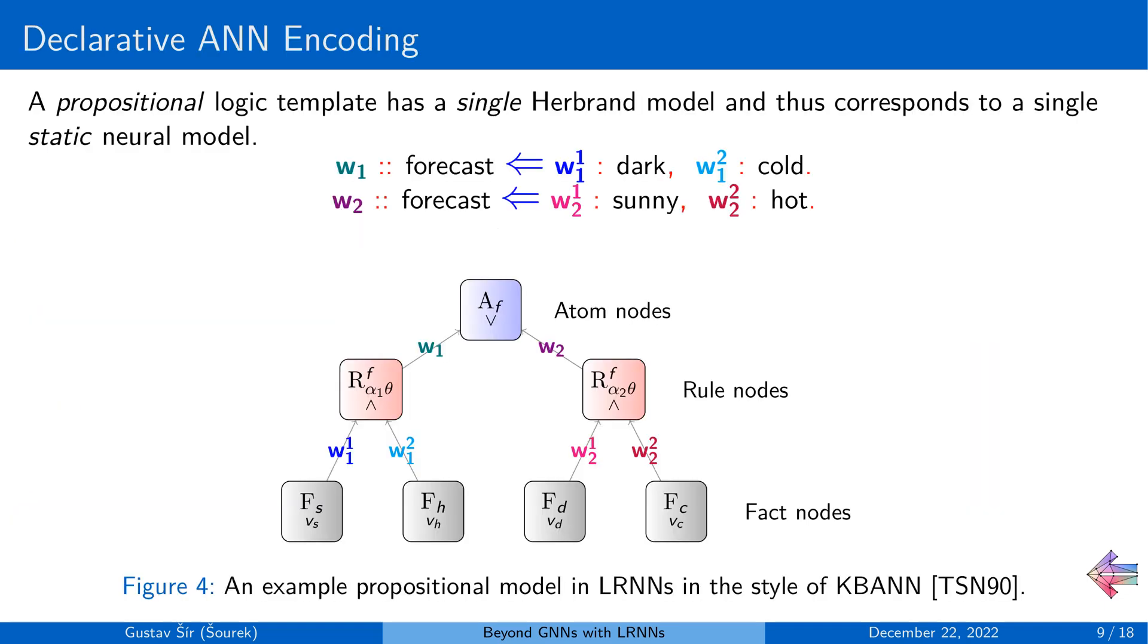So let's start with the simplest concept, which is the standard feed-forward neural nets modeling. Now, exploring correspondences between feed-forward neural propositional logic programs has been done a lot in the 90s already. You might have heard about models such as the knowledge-based artificial neural networks, which is basically just about assigning names to the individual neurons in the network corresponding to the logical atoms from the template, such as the propositions of dark, cold, sunny, and hot here, corresponding to the fact nodes in the network, respectively.